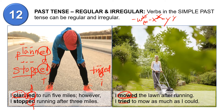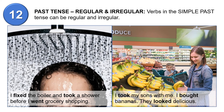'I tried to mow as much as I could. I was tired.' Now: 'I fixed the boiler and took a shower.' 'Fix' ends in X, so even though it is one syllable with consonant-vowel-consonant, you do not double X — just add 'ed': 'fixed'. 'Took' is irregular — present form is 'take', so take/took. 'I fixed the boiler and took a shower before I went grocery shopping.' 'Go/went' — go is present, went is past.